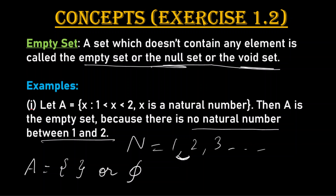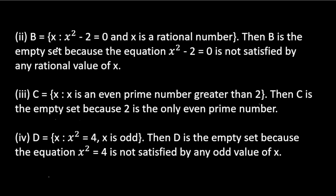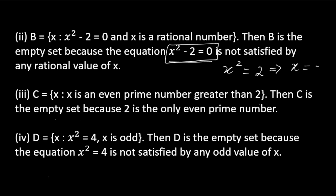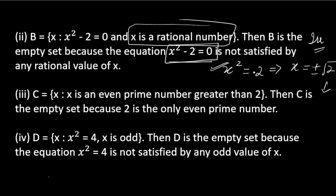Let us discuss examples for a better understanding. Example one: let A = {x : x > 1 and x < 2, x is a natural number}. There is no natural number between 1 and 2, so A is the empty set. Example two: let B = {x : x² - 2 = 0, x is a rational number}. Solving gives x = ±√2, which is irrational, not rational. So B contains no element and is the empty set.